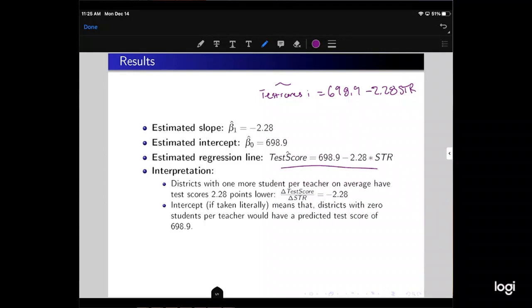The interpretation is the district, school district, so each i represents one school district. A district with one more student per teacher, on average, has test scores 2.28 points lower than districts with one less student per teacher. In other words, as we make a marginal change, as we increase the number of students per teacher, the test scores go down by 2.28 points.